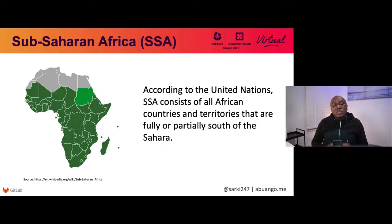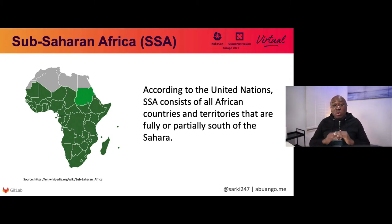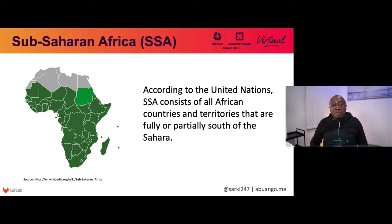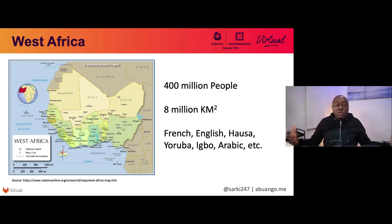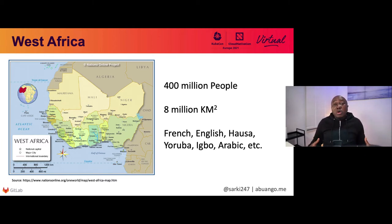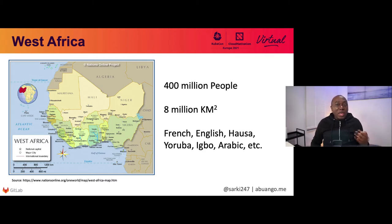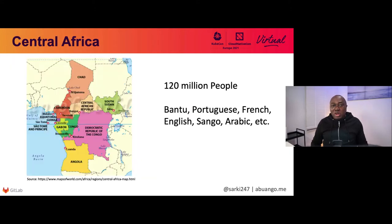The next region is Sub-Saharan Africa — countries to the south of North Africa, composed of most of the countries within Africa. Within Sub-Saharan Africa we have West Africa, which includes Nigeria, where I'm from, Ghana, Cote d'Ivoire, Niger Republic, Mali, Mauritania, and a host of other countries. Out of the 400 million people in West Africa, Nigeria is composed of like 40 to 50 percent of that. There are loads of languages spoken within West Africa — I personally speak Hausa, Yoruba, English, and a bit of Arabic.